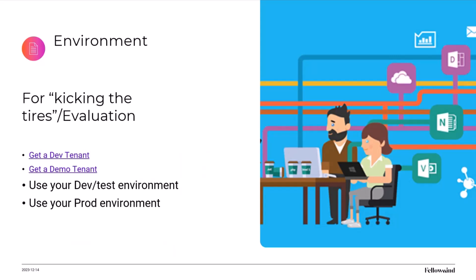Something about environments: the optimal way to test the PNP web parts — to kick the tires and see what they can do — is to get an environment where you are your own master. If you can get a developer tenant using the Microsoft 365 Developer Program, that would be optimal, because you have your own tenant, you are your own global admin, you can do whatever you want, and that gives you all the options available.